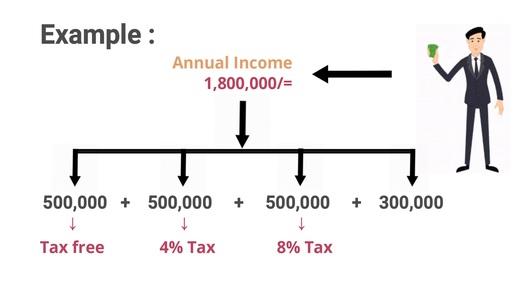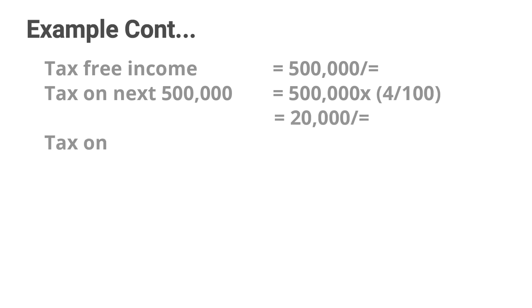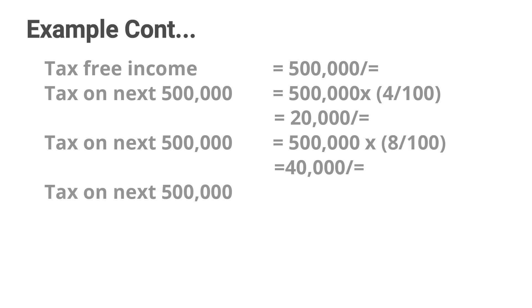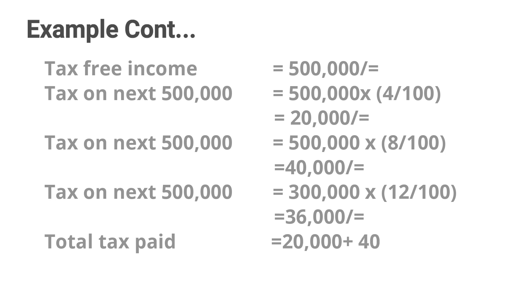4 percent and 8 percent tax is imposed on the next two 500,000 portions, and 12 percent tax is imposed on the final 300,000 rupees. Now we calculate the tax for each portion separately. First portion is tax free. Second portion has a tax of 20,000 rupees. Third portion gives an amount of 40,000 rupees, where the last portion gives a tax of 36,000 rupees. Once the tax imposed for each portion is added, we gain 96,000 rupees. So Mr. Perera must pay 96,000 rupees as income tax on his annual income.